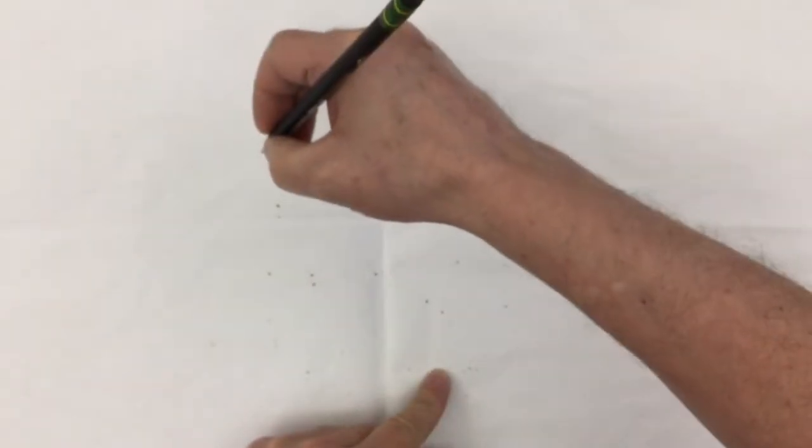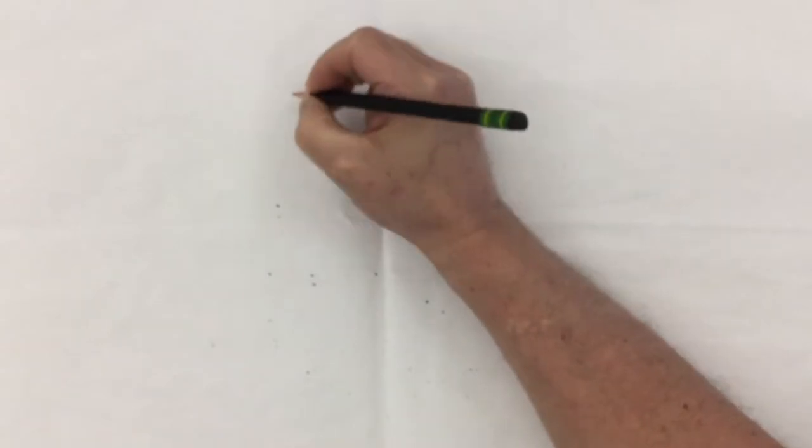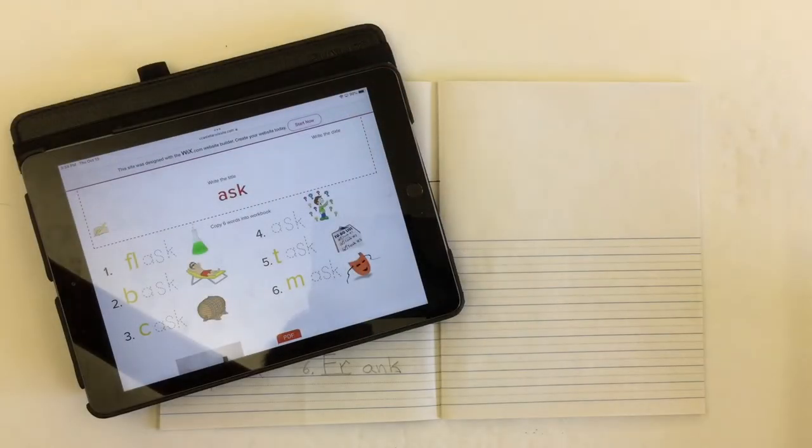So in today's spelling lesson, we're looking at words that have the ASK ending from the ask word family. We have words like flask and bask, cask, ask, task, and mask.